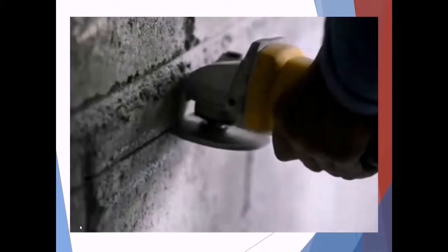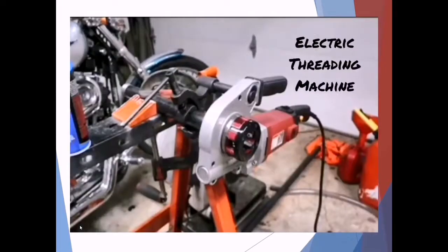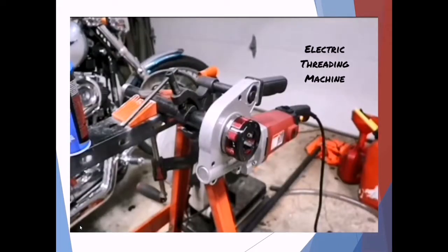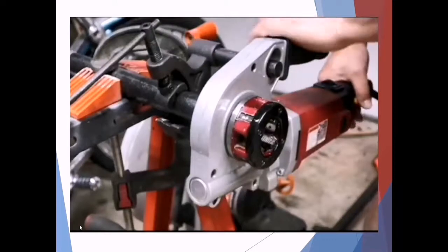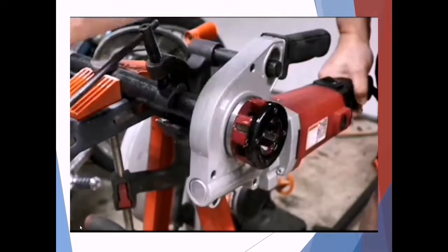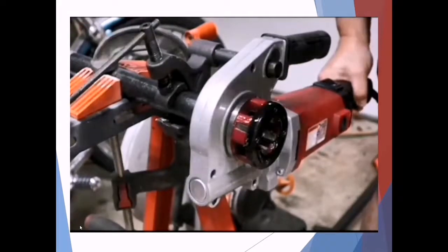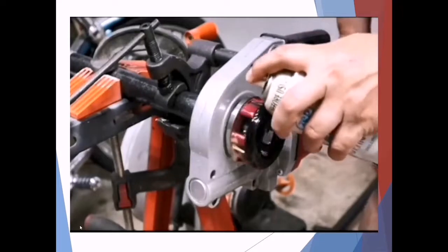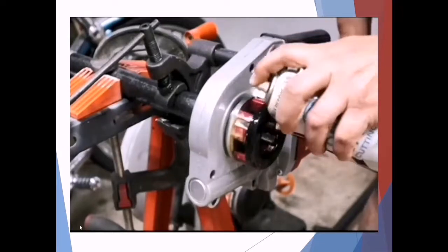An angle grinder is used for cutting or chasing the wall in order to insert pipes as well. An electric threading machine is used to make threads in pipes, also like the one we saw in part one — the difference is that it is powered by electricity.